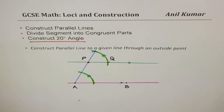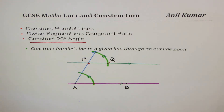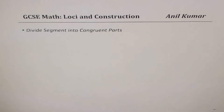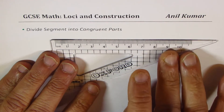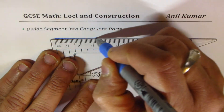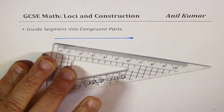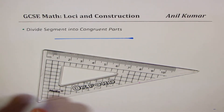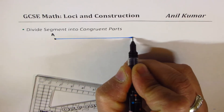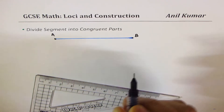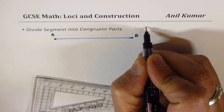Now let's move on and see how to divide a segment into congruent parts. We have a line segment AB — let me take the length of the segment as six units so it will be easy to test. We need to divide this line segment into three equal parts.